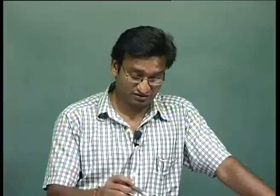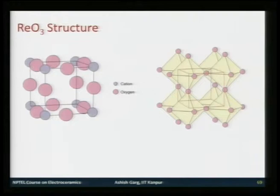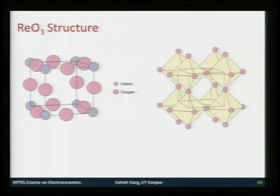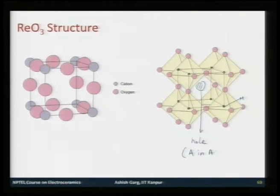In the polyhedral model of the rhenium oxide structure, similar to how we viewed perovskite, the metal positions at corners are each surrounded by 6 anions forming octahedra, and the center of the unit cell which would be the A site in ABO3 is empty — it is a hole. So it can be visualized as an ABO3 perovskite structure with empty A sites.